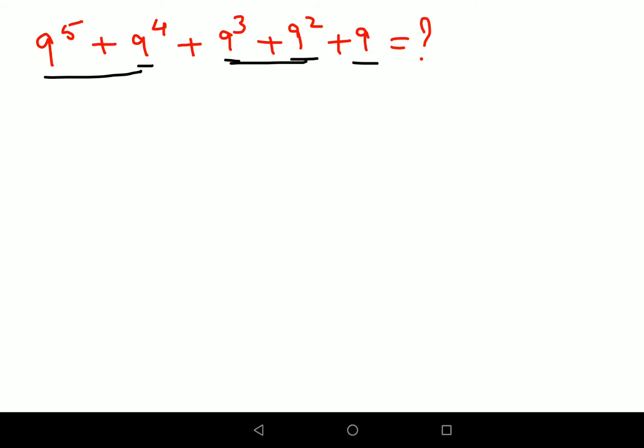Now between 9 raised to 5 and 9 raised to 4, what is common? I can say 9 raised to 4 is common and I am left with 9 plus 1. Similarly, 9 raised to 3 and 9 raised to 2, what is common? 9 raised to 2 is common and I am left with 9 plus 1, plus there is 9.